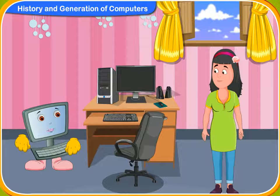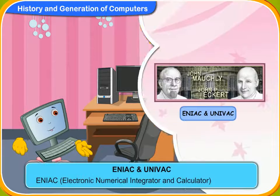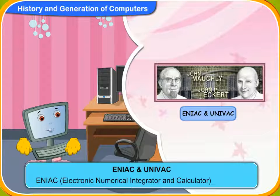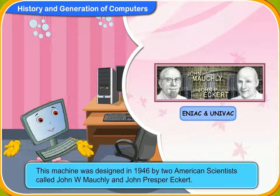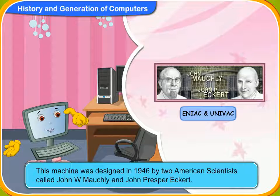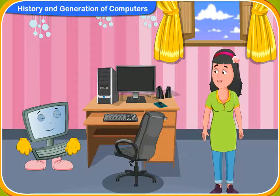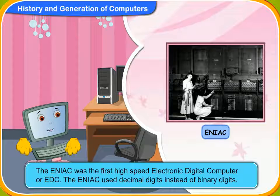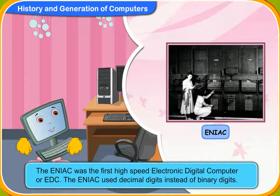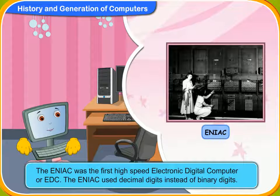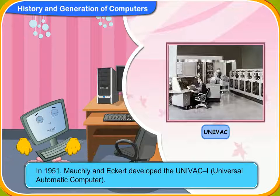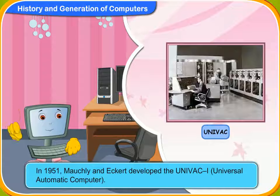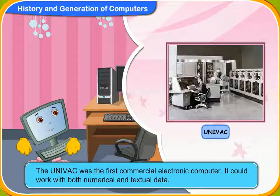Let me now tell you about ENIAC and UNIVAC. What are these, Clicko? ENIAC stands for Electronic Numerical Integrator and Calculator. This machine was designed in 1946 by two American scientists called John W. Mauchly and John Presper Eckert. Unlike the earlier machines, the ENIAC used decimal digits instead of binary digits. The ENIAC was the first high speed electronic digital computer. In 1951, Mauchly and Eckert developed the UNIVAC 1 — it stands for Universal Automatic Computer. The UNIVAC was the first commercial electronic computer. It could work with both numerical and textual data.